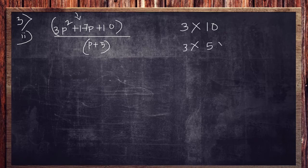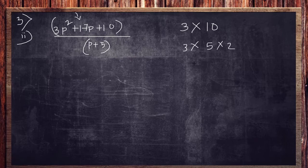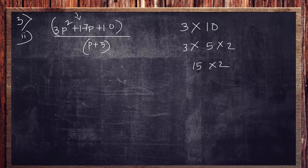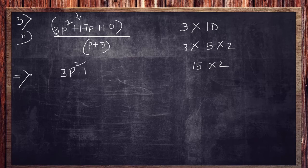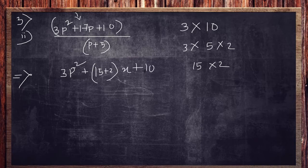3 into 5 into 2. So 5 into 3, that is 15, and that is 2. So we know that 15 plus 2 which is 17. So just put the value: 3p square plus 15p plus 2p plus 10. That is divided by p plus 5.